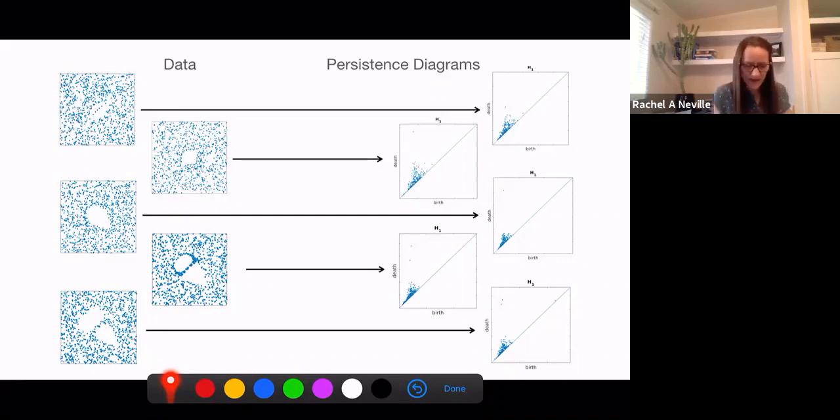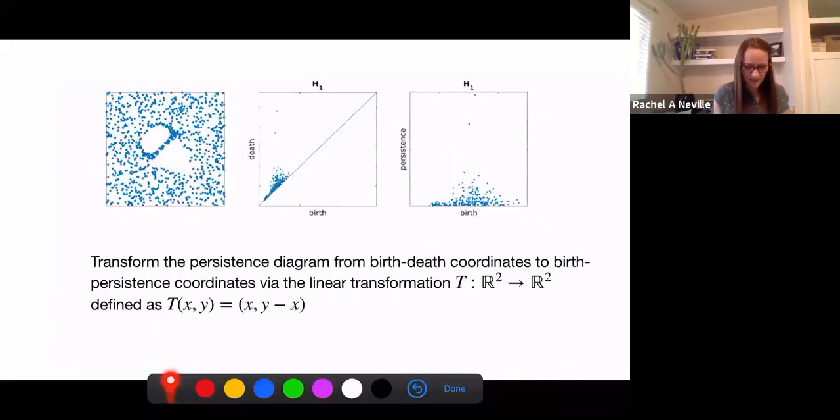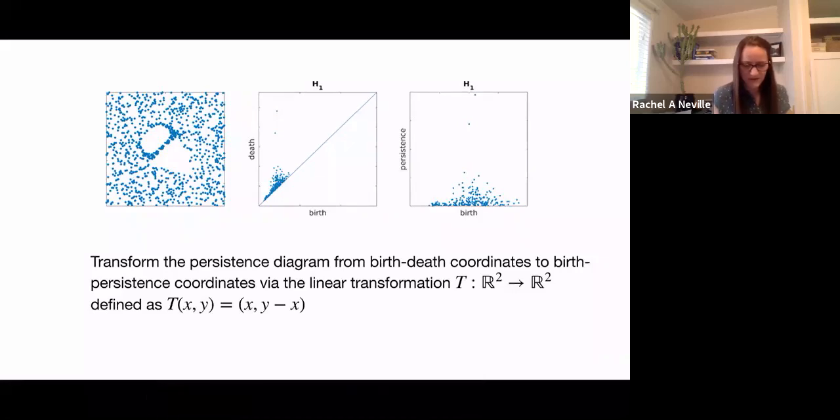So let's take an example, compute the persistence diagram here. We're using the Vietoris-Rips filtration on the two dimensional point cloud. I'm showing you H1 because that's where the most interesting action on this example is. We're going to transform my data from birth death coordinates to birth persistence coordinates to begin with, because I don't expect there to be any points below the diagonal. And so we're just going to get rid of that area.